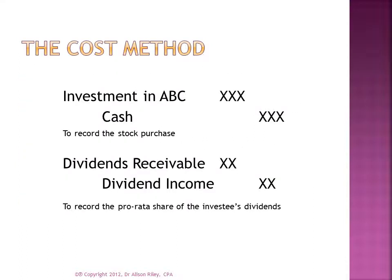This slide illustrates the application of the cost method. The first journal entry shows the purchase of common stock by the investor, recorded at cost. When the investee declares a dividend, the investor will receive its pro-rata share of the dividend payment based on the percentage of the investee's stock that the investor owns. Assume the investor owns 10% of the investee's outstanding stock — the investor will receive 10% of the investee's dividend payout. At the point the investee declares a dividend, a legal liability is created. Accordingly, the investor records its pro-rata share of the dividend as a receivable, as illustrated in the second journal entry.